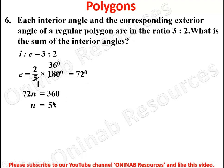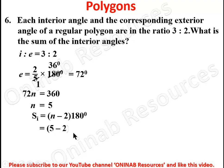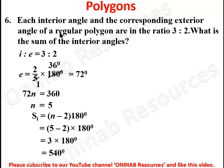Now we find the sum of the interior angles. With n equal to 5, the sum is 5 minus 2 times 180 degrees, which is 3 times 180, giving 540 degrees. So the sum of the interior angles of this regular pentagon is 540 degrees.